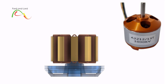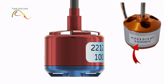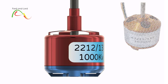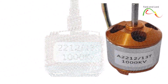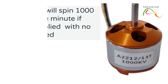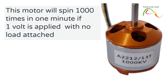The last value on the second line is KV. KV rating refers to the motor's velocity constant, representing the RPM — revolutions per minute — the motor will spin per volt applied to it. A low-KV motor typically has a lower RPM per volt compared to a high-KV motor. In simple terms, KV describes the number of revolutions per minute that a motor turns when one volt is applied with no load attached to the motor.